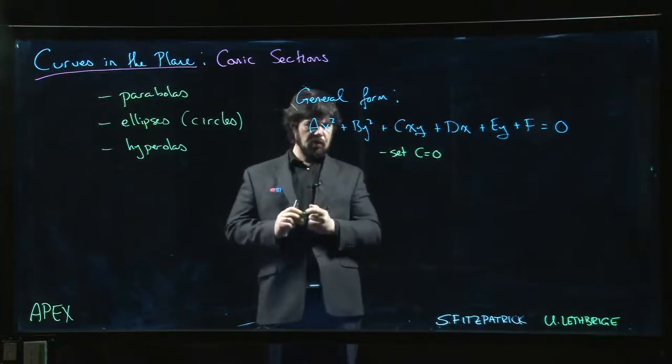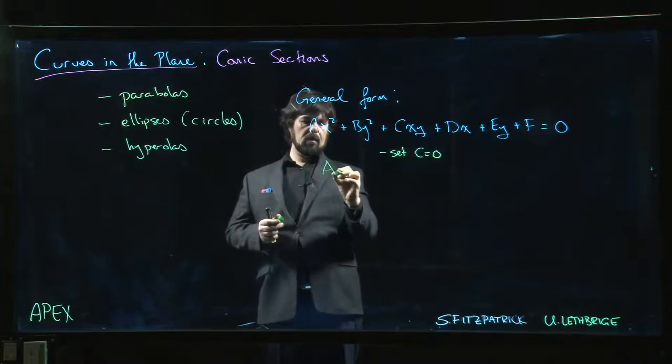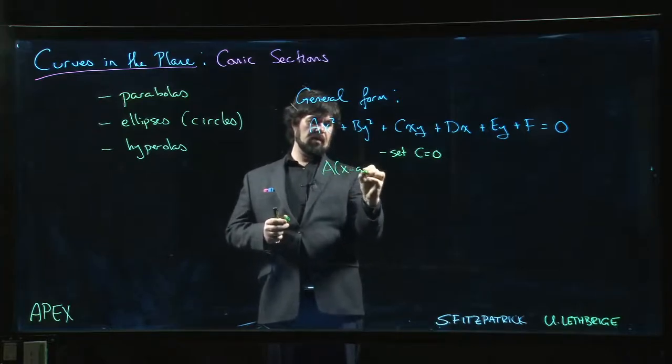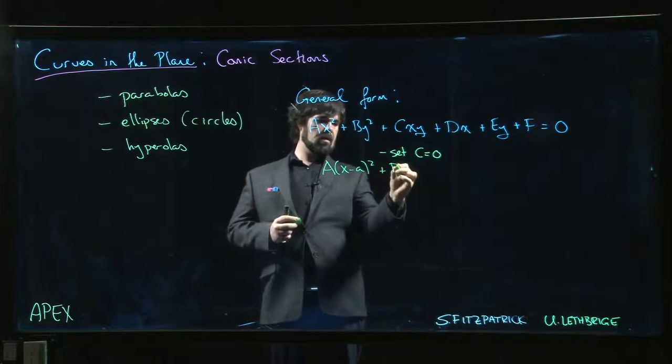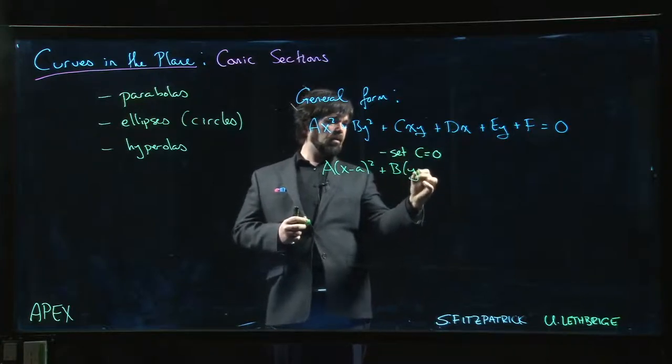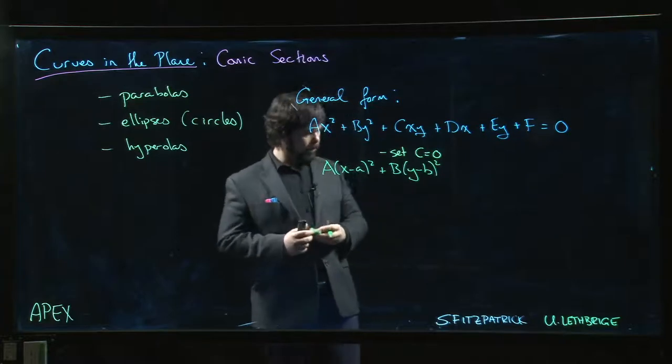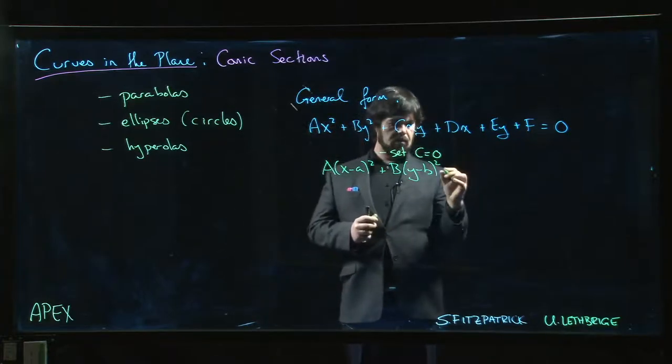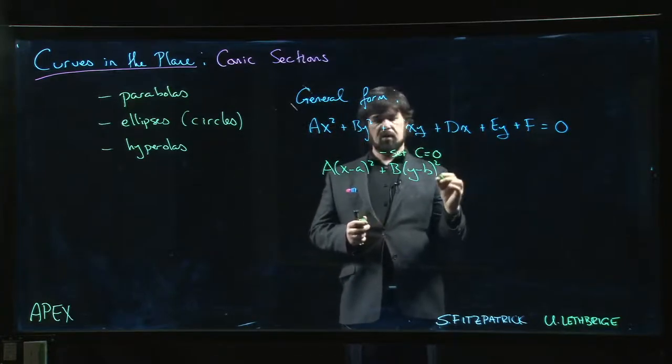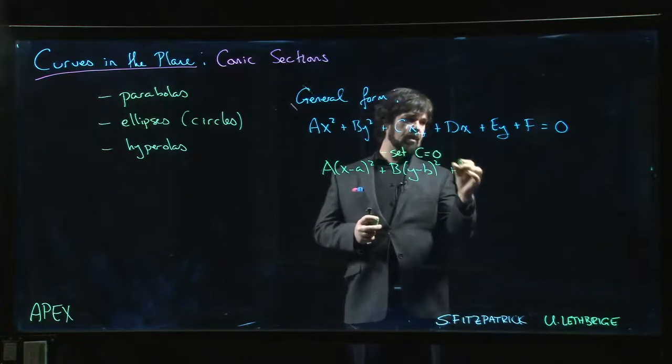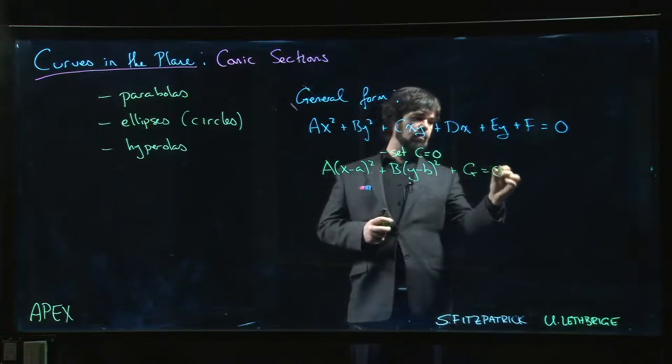So if you set C equal to zero, you kind of have something that looks like A times (x - a)² plus B times (y - b)² plus maybe G equals zero.